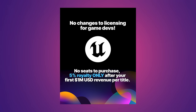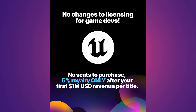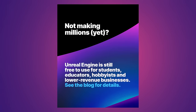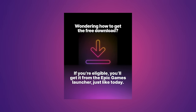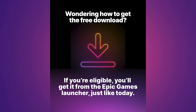The main points: the pricing model is not changing for game developers — you don't have to purchase a license. The license model remains a 5% royalty only after your first $1 million in revenue per title. For the non-game side — things like films and archviz — Unreal Engine is still free for students, educators, hobbyists, and lower-revenue businesses. They're not changing anything about the free download process; if you're eligible, you can just download it from the Epic Games launcher just like today.